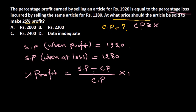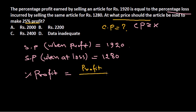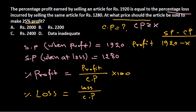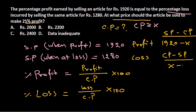Percentage profit means gain divided by cost price, multiplied by 100. So profit when selling at 1920 is simply SP minus CP, which is 1920 minus X. For percentage loss, it is loss divided by cost price into 100, and loss equals cost price minus selling price, which is X minus 1280.